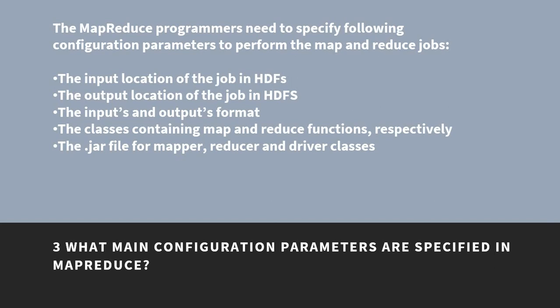What are the main configuration parameters specified in MapReduce? MapReduce programmers need to specify the following configuration parameters to perform map and reduce jobs: the input location of the job in HDFS, the output location of the job in HDFS, the input and output formats, the classes containing map and reduce functions, and the job JAR file for mapper, reducer, and driver classes.